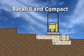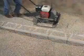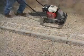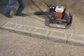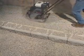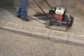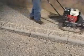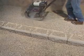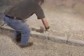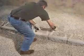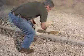Backfill and compact. Compact behind the block in a path parallel to the wall working from the back of the block to the back of the backfill area. Make a minimum of 2 passes with a mechanical plate compactor. Always compact in 8-inch lifts or less. Remember to keep all heavy equipment at least 3 feet away from the back of the blocks.